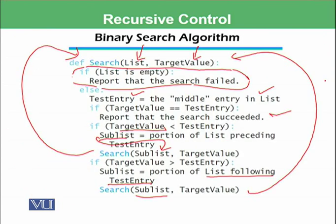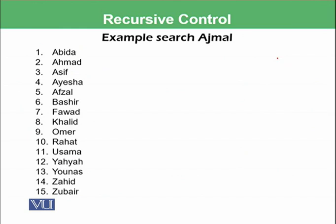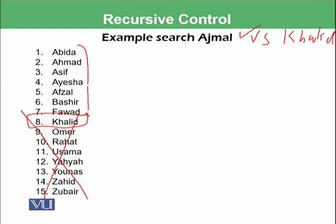Now let's test the condition when the list is empty. For the same example we want to find Ajmal. Again the first step is to select the midpoint Khalid and compare it with Ajmal. We find that the right portion is of no use and our required information lies in the first seven entries: Abida, Ahmed, Asif, Aisha, Afsal, Bashir, and Fawad.